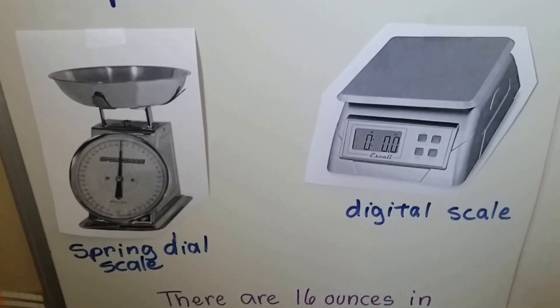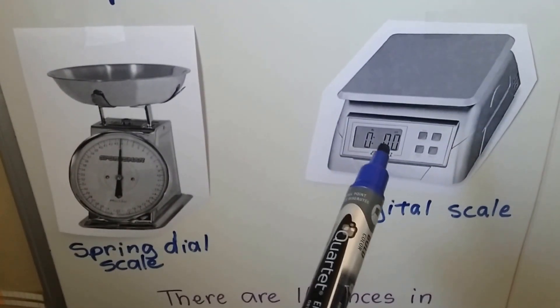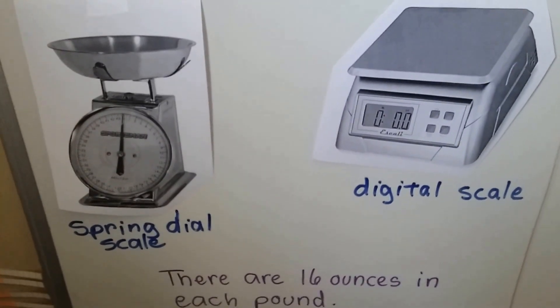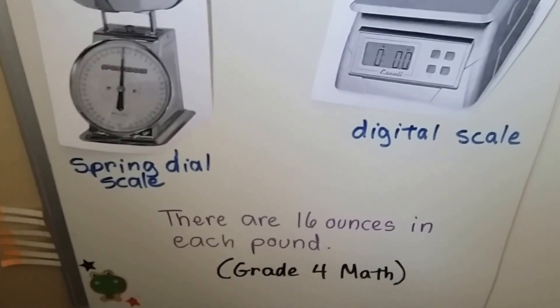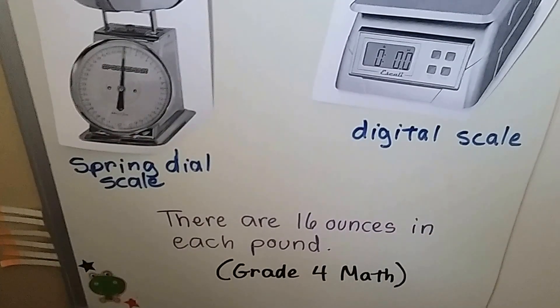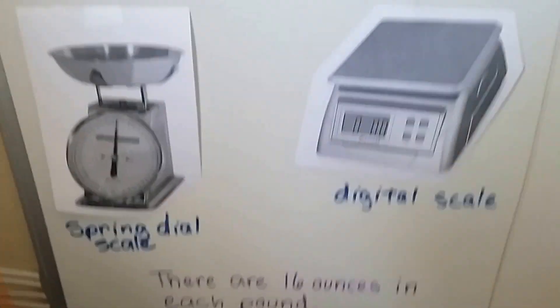And the digital scale, we just put it on top here and that tells us the pounds and that tells us the ounces. Ounces are smaller than a pound. In fact, there's 16 ounces for each pound, but we're going to get into that in grade four math. This is only grade two math.